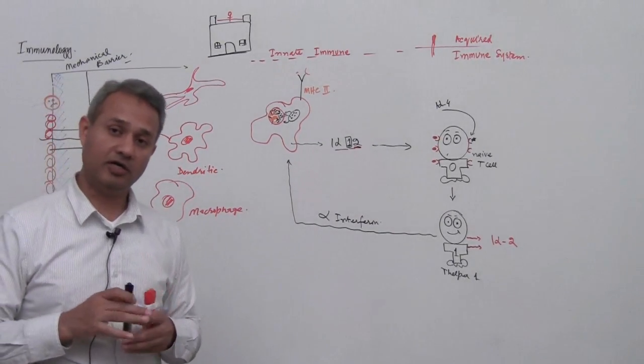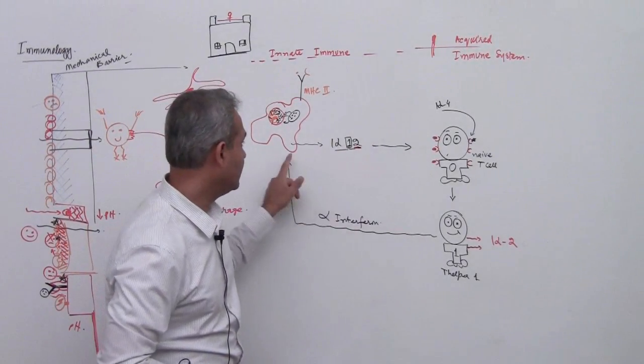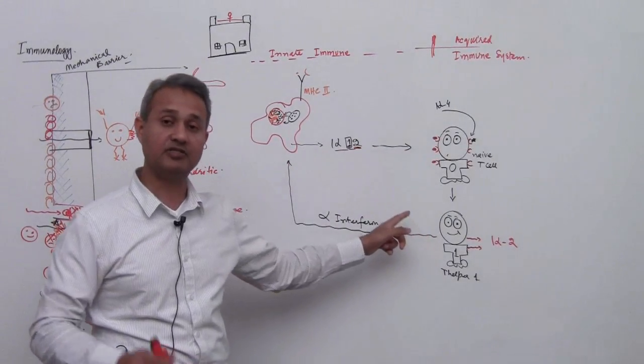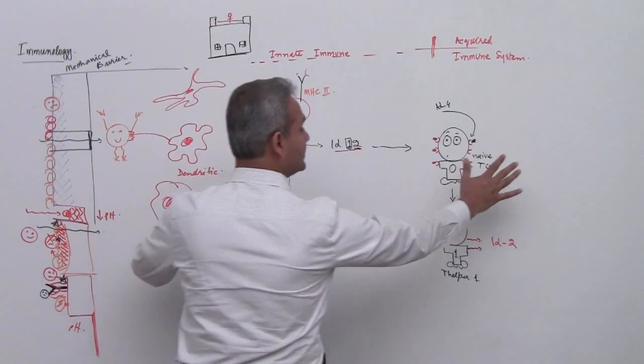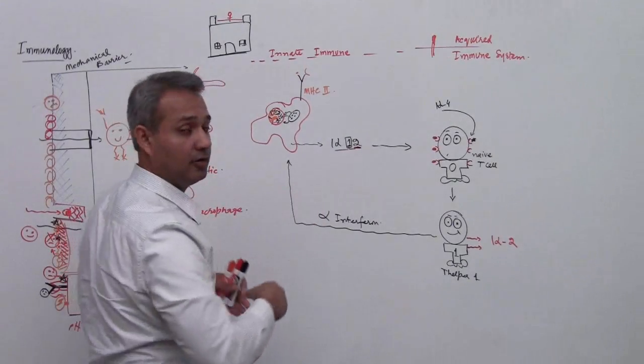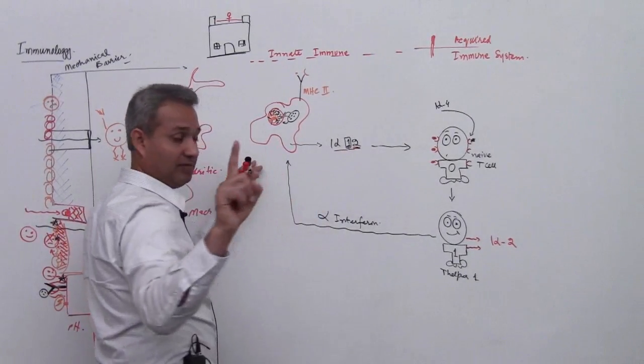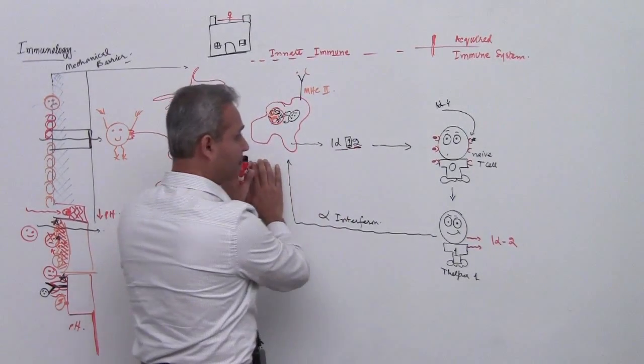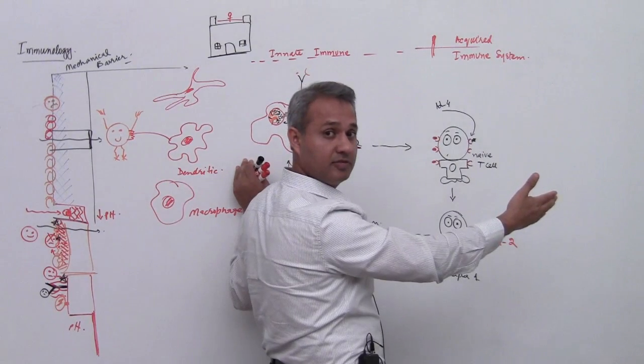No matter what, do not forget this IL-12 gamma interferon axis. This is really important. If you see, this is acquired arm of immune system and this is innate arm of immune system. There was a bridge, remember I said if you're going to remember one thing, remember that macrophage is going to activate the acquired system.